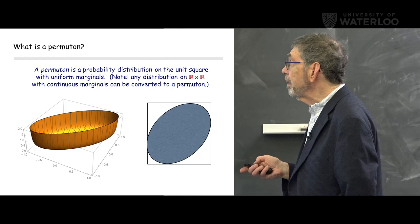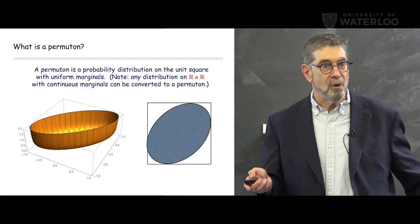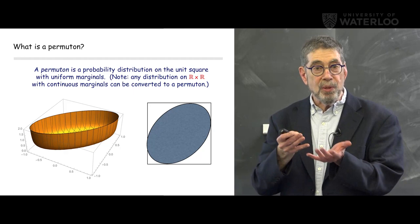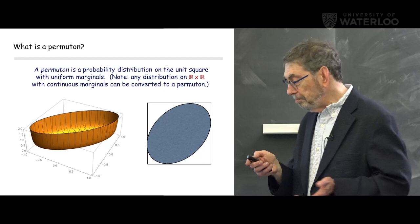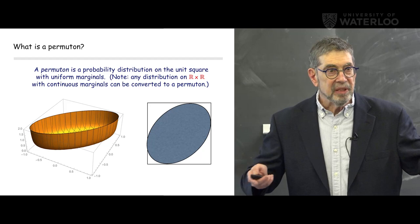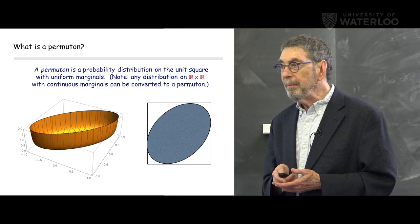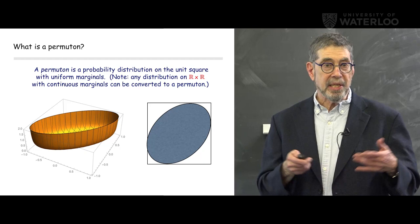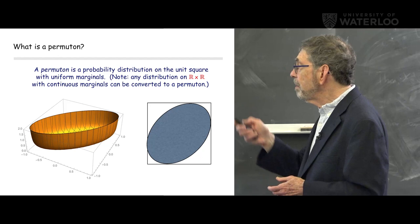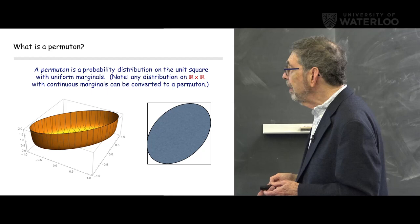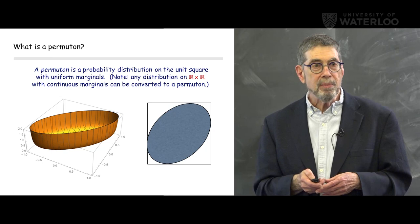The support of this particular distribution happens to be an inscribed ellipse — it's zero outside that ellipse. Very often when you look at pictures of permutons, all you get to see is the support, and you have to figure out what the rest might look like. So here's a quiz: we wanted to know which sets are the support of a permuton. Here are eight sets — which of them can be the support of a permuton? At the end we'll use our results to answer the question.